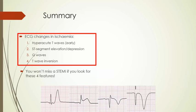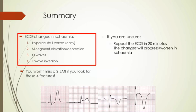Having said that, there's always going to be times you're unsure. If you're unsure, my first piece of advice: repeat the ECG. Get another ECG in 10 or 20 minutes, and if there is ischemia, the ECG changes should worsen or progress in some way.